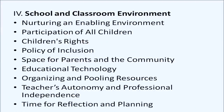The fourth section is School and Classroom Environment. It discusses how to provide an enabling environment, how to nurture it, and how to ensure all children get a chance to participate in class. It takes care of children's rights and the policy of inclusion, where every child is included irrespective of any problems a particular child has. There is space for parents and community — they are free to talk to the teacher and come to the school. It also covers using educational technology, organizing and pooling available resources, giving teachers autonomy and professional independence, and ensuring they get time for reflection and further planning.